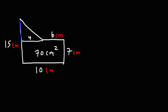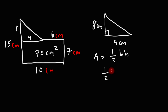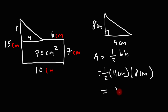Now what about the height of this triangle? Notice this side is 15 centimeters and this side is 7. Subtracting those two gives us this portion, so it's 15 minus 7, which gives us 8. So we have a triangle with a base of 4 centimeters and a height of 8 centimeters. Using the formula one half base times height: one half times 4 times 8 — 4 times 8 is 32, half of 32 is 16. So this part is 16 square centimeters.